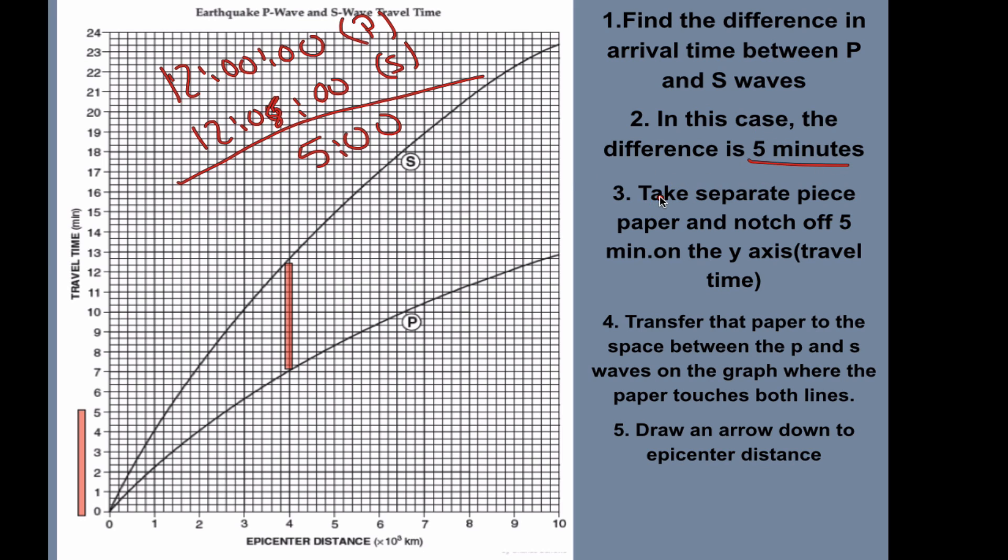We're then going to take a separate piece of paper, much like we would do with making profiles. And we're going to notch off 5 minutes on the y-axis travel time. So here, I have my little marker. I went here, put my paper up, it marked 5 minutes. You need to be precise when doing this. Then what you're going to do is transfer your piece of paper to the space between the P and S waves on the graph where both lines touch that mark. So we're going to take this, transpose it up, and you'll see that it hits here and here. Once we know where that line or those two marks hit the P and the S waves, we draw a line down and we get about 4,000 kilometers.